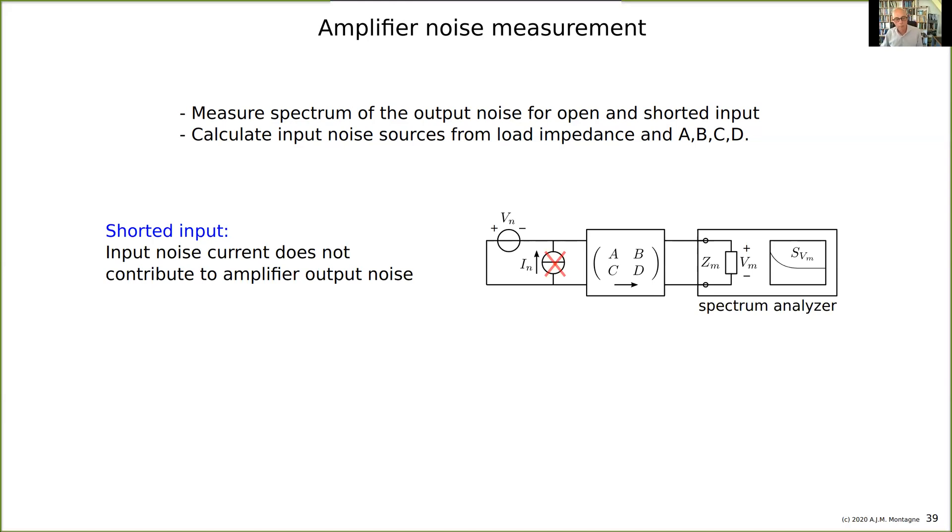Then I model the amplifier as a noisy amplifier with two equivalent input noise sources, Vn and In. If I short the input, you see that the In flows completely through the short, so In cannot contribute to the noise that is observed at the output of the amplifier.